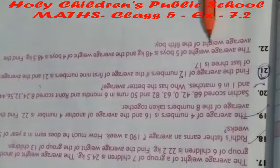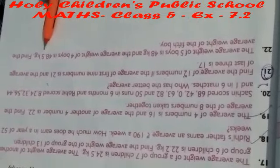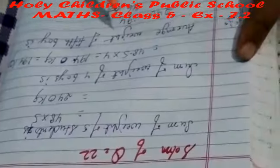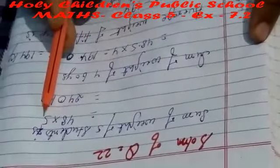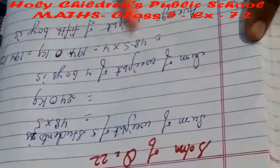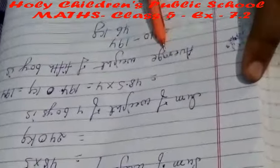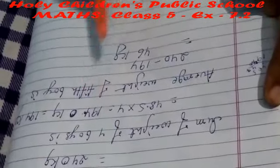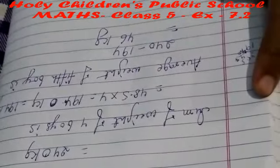Question number 22: the average weight of 5 students is 48 kg and the average weight of 4 boys is 48.5 kg. Find the average weight of the 5th boy. The sum of weight of 5 students is 48 × 5 = 240 kg. The sum of weight of 4 boys is 48.5 × 4 = 194 kg. So the weight of the 5th student is 240 − 194 = 46 kg.